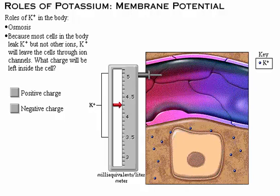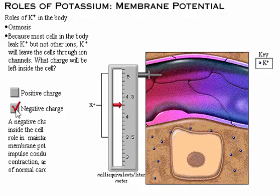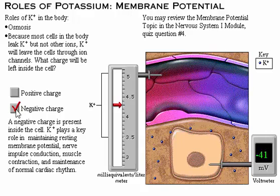A negative charge is left inside the cell. Potassium plays a key role in maintaining resting membrane potential and therefore a major role in nerve impulse conduction, muscle contraction, and maintenance of normal cardiac rhythm.